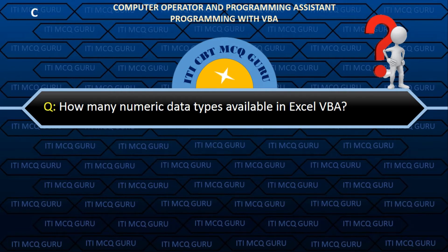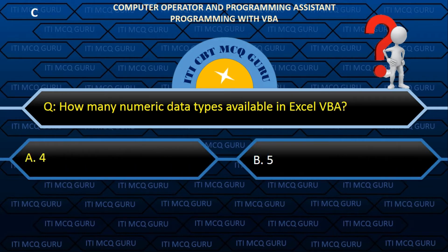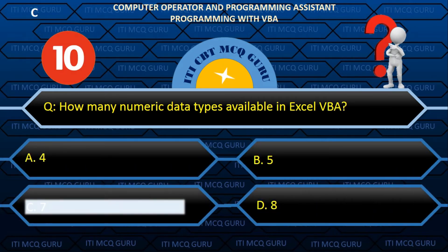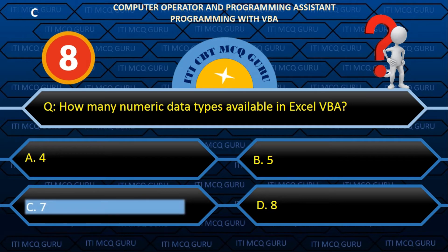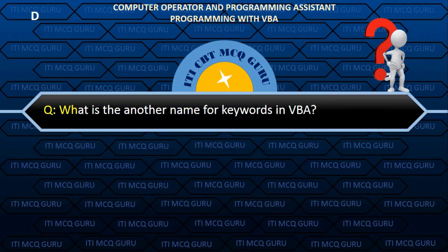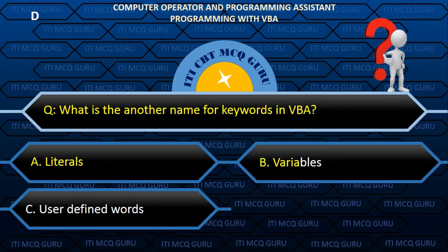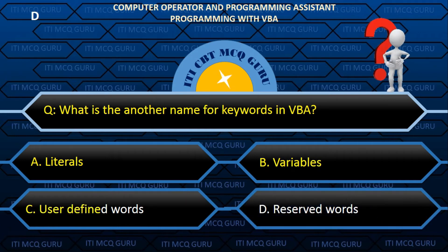How many numeric data types are available in Excel VBA? Answer: D. Reserved words.